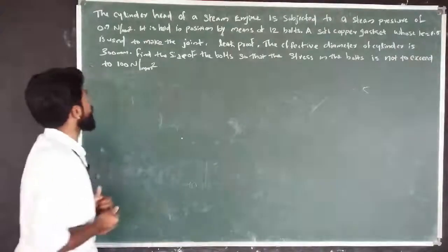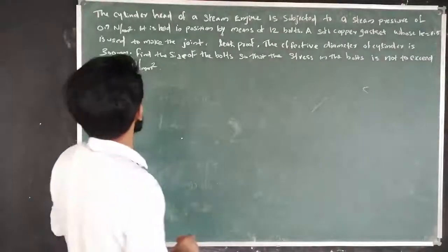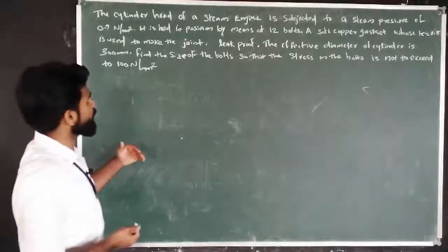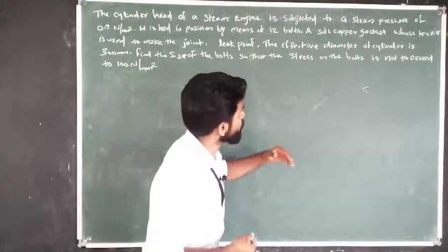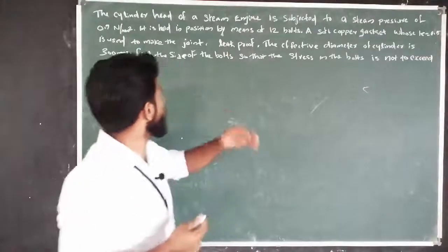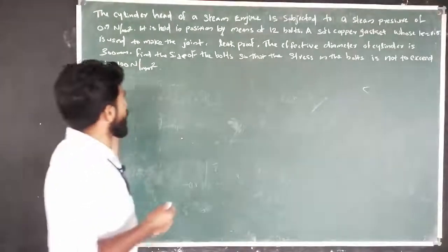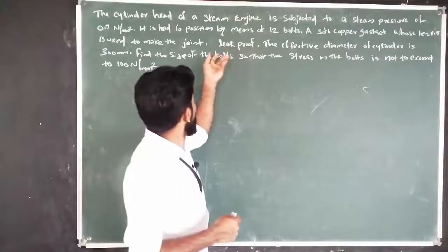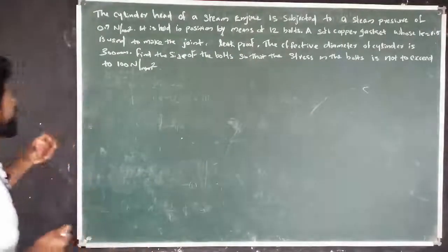The question is: The cylinder head of a steam engine is subjected to a steam pressure of 0.5 N/m². It is held in position by means of 12 bolts. A soft copper gasket with stiffness constant K = 0.5 is used to make the joint leak proof. The effective diameter of the cylinder is 300 mm.